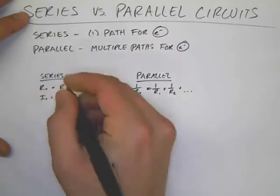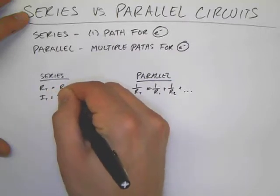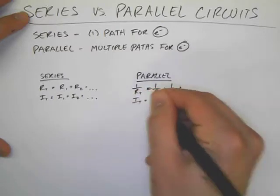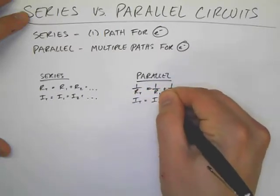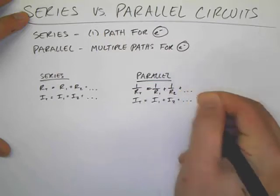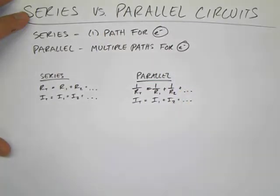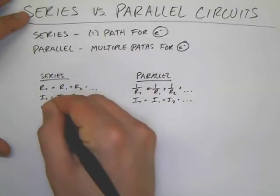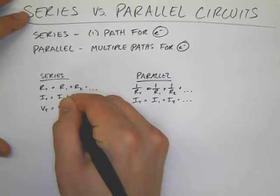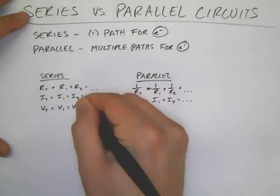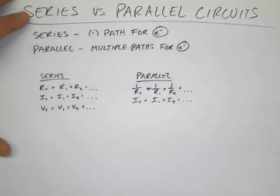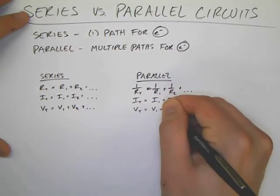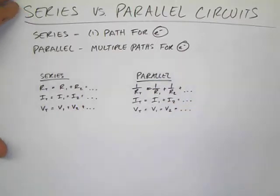In series, the current flowing through the circuit is the same everywhere, whereas in parallel, the current adds up to equal the total. So it has to split. It either goes through one path or the other, but not both. In series, the voltage is a combination of the individual voltages measured across each resistor or component. In parallel, the voltage is the same across each path.